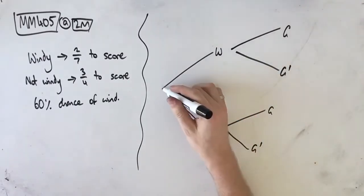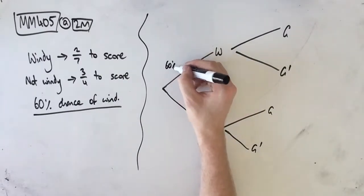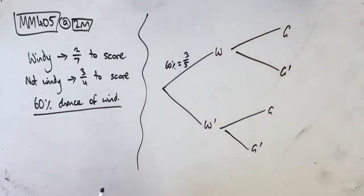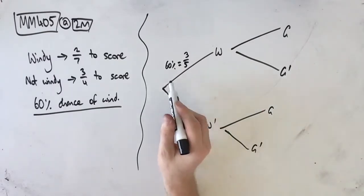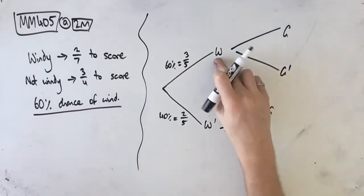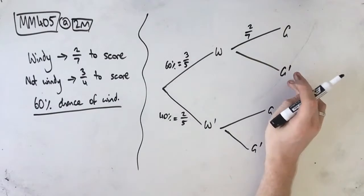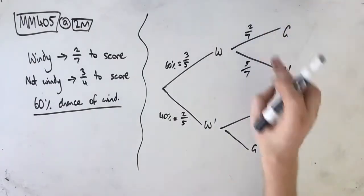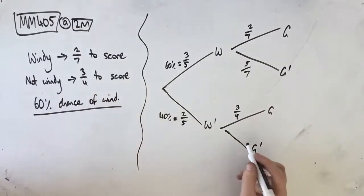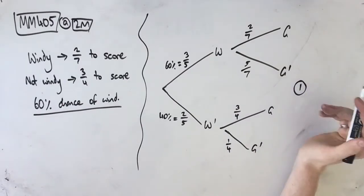The probability that it's windy is 60%, which means we have a 60% chance for it to be windy. I'm going to convert this to a fraction because we don't have our calculator. So 60% as a fraction is 3 in 5. And if there's a 60% chance of wind, that means there's a 40% chance of no wind, which is 2 in 5. If it's windy, the chance he scores a goal is 2 in 7, which means the chance not to score is 5 in 7, because these two must add to 1. If it's not windy, Addison has a 3 in 4 chance to score, which means he has a 1 in 4 chance not to score. This is our tree diagram set up, and this is actually our first mark.